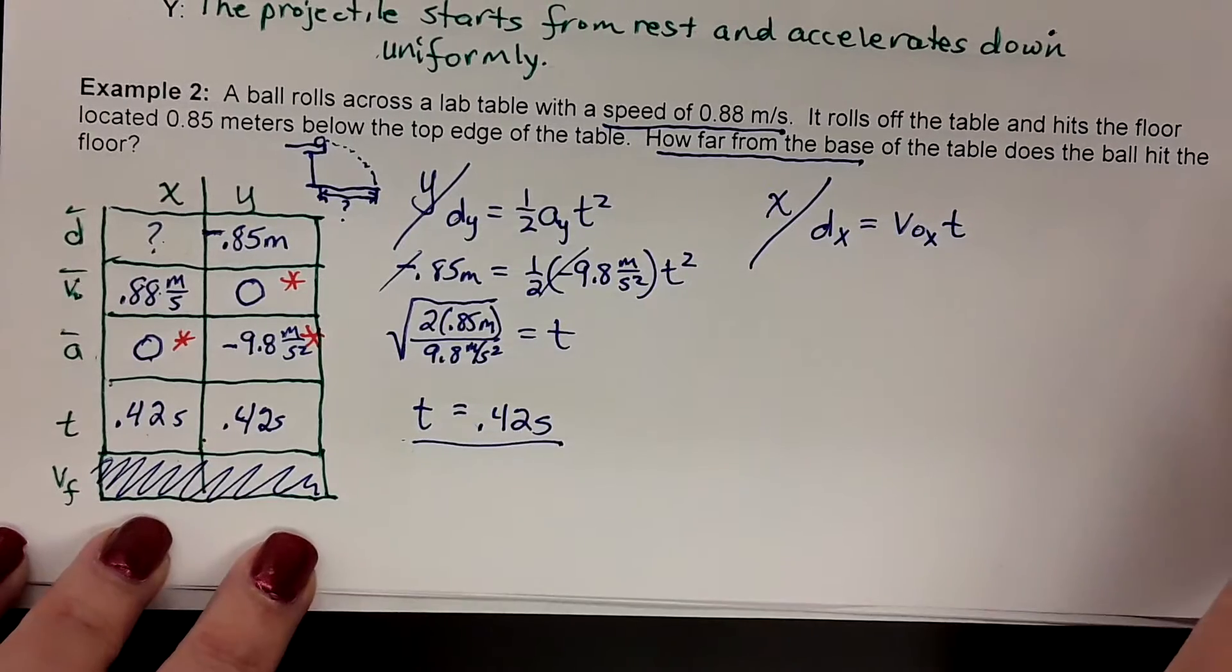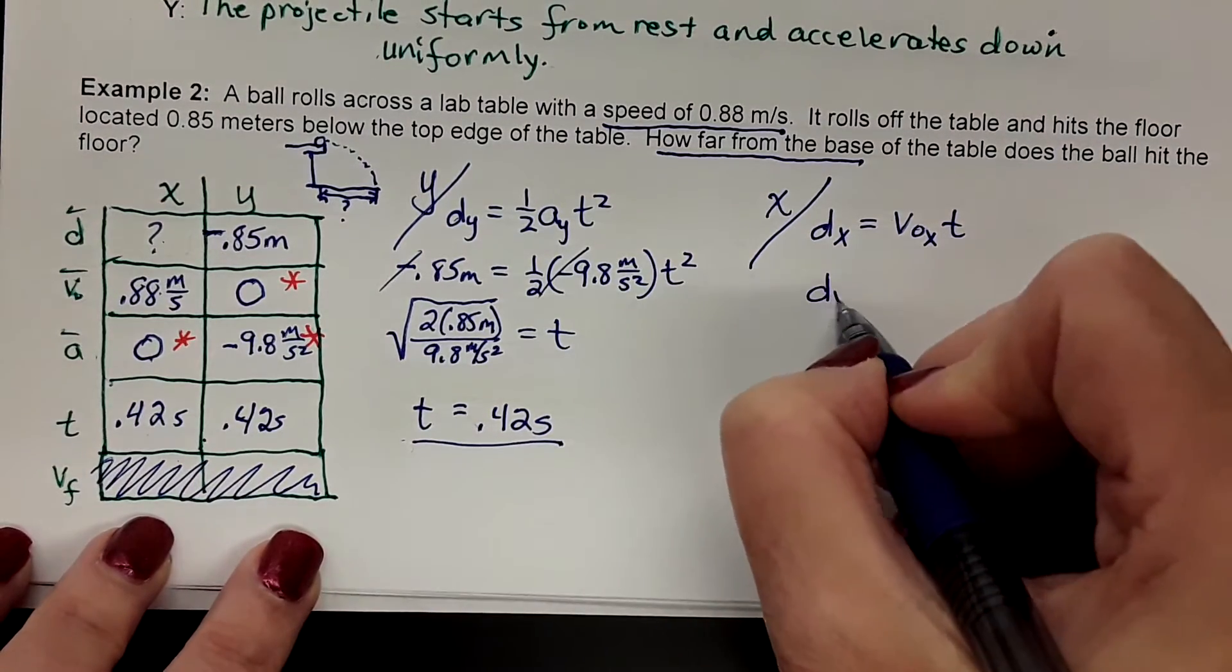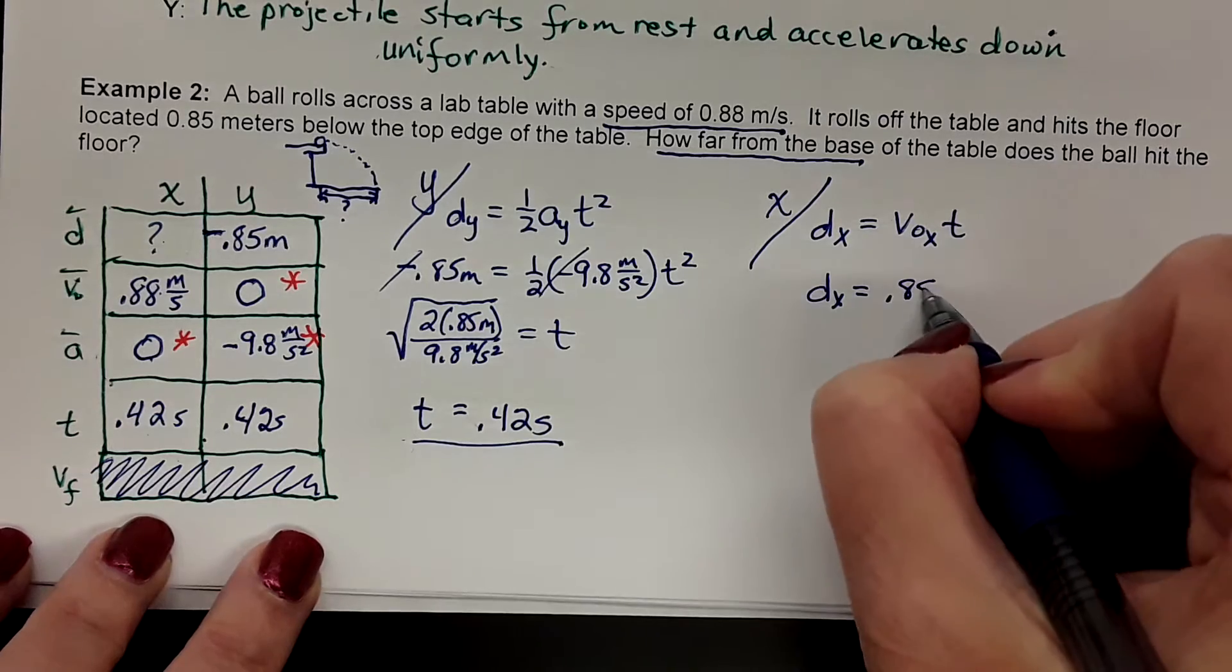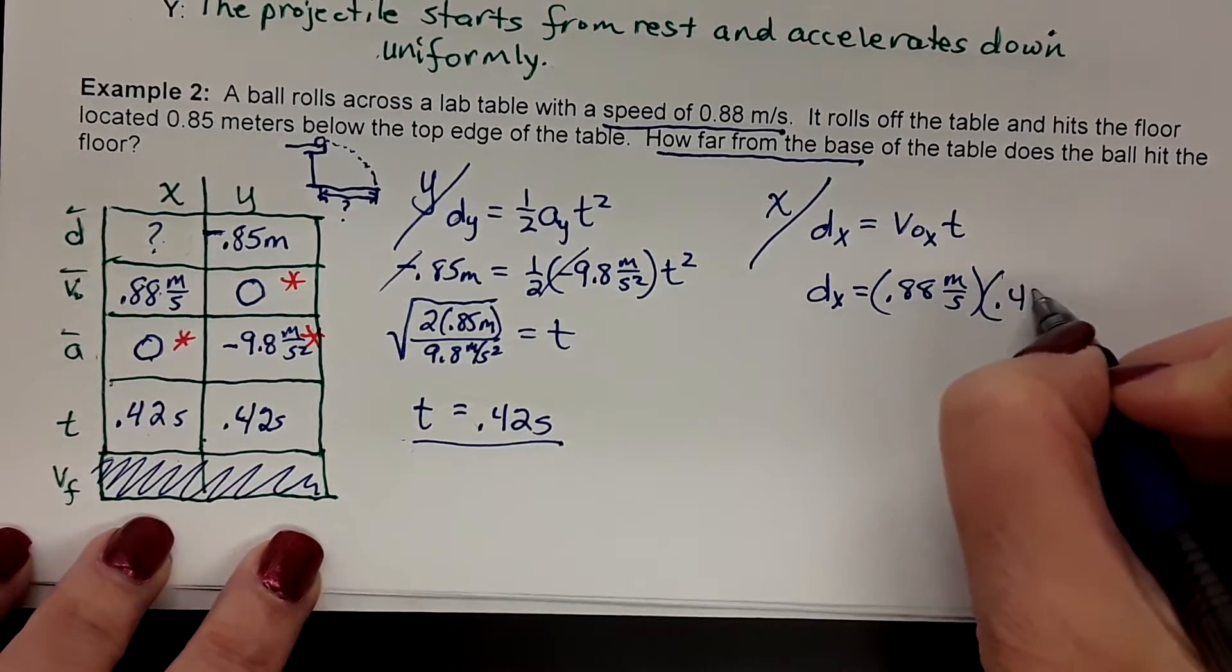We don't need the one half a t squared part because it's zero. And we get dx equals 0.88 meters per second times 0.42 seconds.